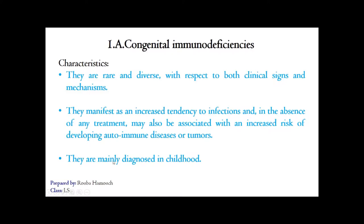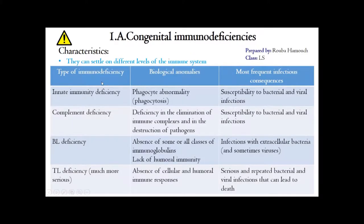Congenital immunodeficiencies are mainly diagnosed in childhood. Here we have a table showing the different types of immunodeficiencies, the biological anomalies associated with them, and the most frequent infectious consequences. We can have innate immunity deficiency — mainly a deficiency in phagocytes and phagocytosis. As a consequence, we have susceptibility to both bacterial and viral infections, since phagocytosis is not antigen-specific. A lack in macrophages and neutrophils leads to abnormality in eliminating extracellular and intracellular pathogens.